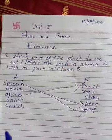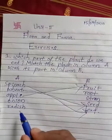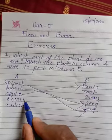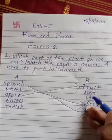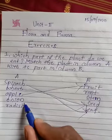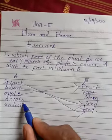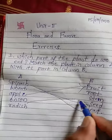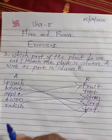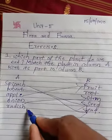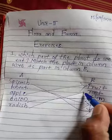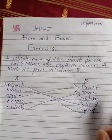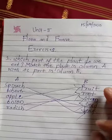Onion is there. Look here — the remaining two parts in column B are root and stem. Onion is matched with which one — root or stem? Onion is not a root, it is a stem. And radish is a root. So these are the correct matches.